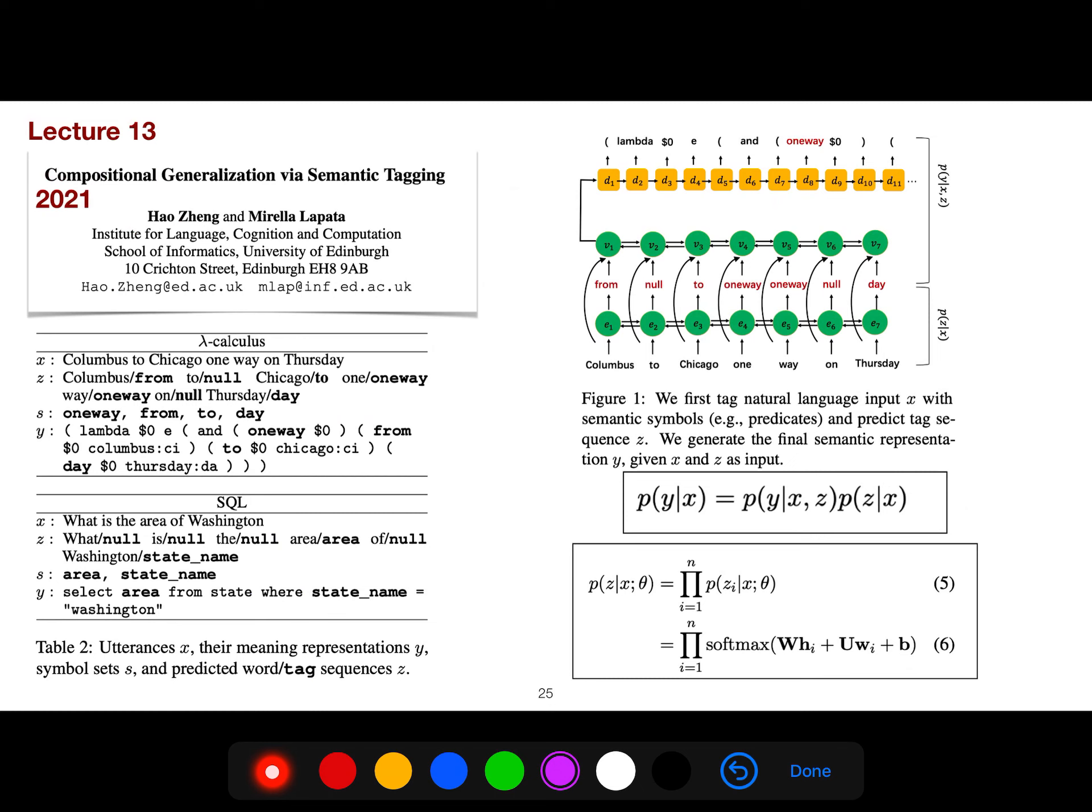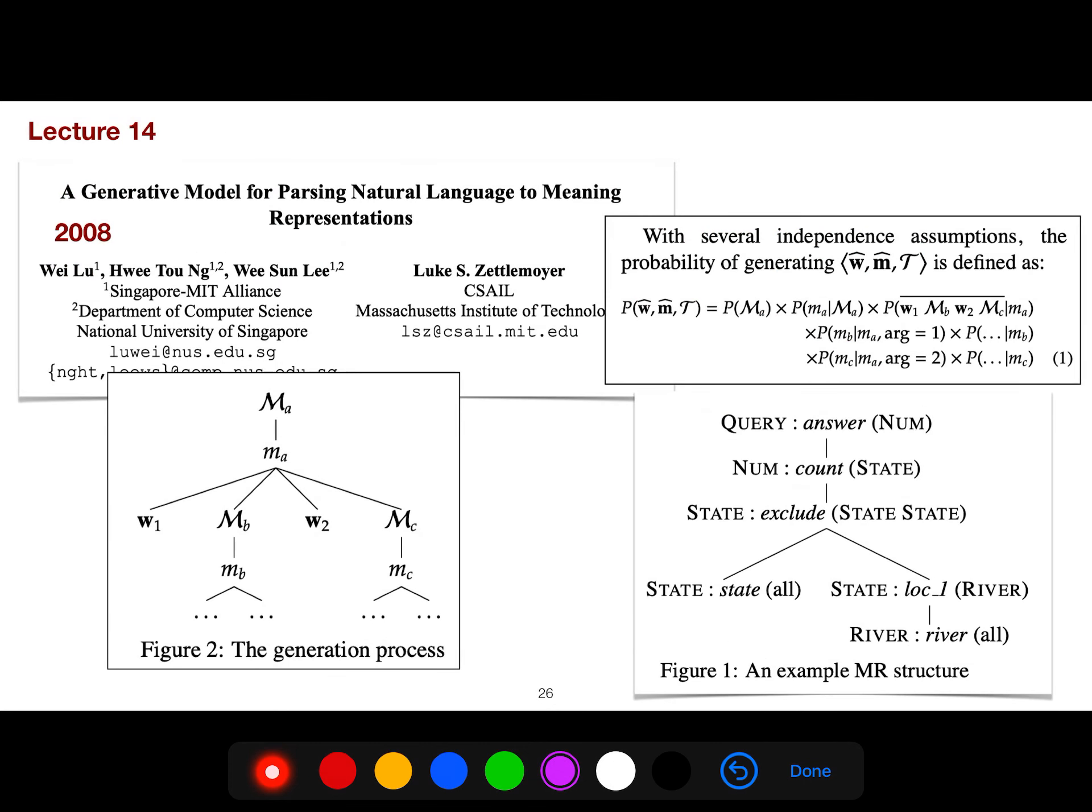In lecture 13, I explain another beautiful article of Mirella Lapata. And she creates a middle layer again, like tagging, semantic tagging, and then taking advantage and leveraging that to produce Y. So Z is your latent variable.